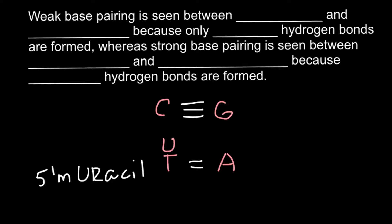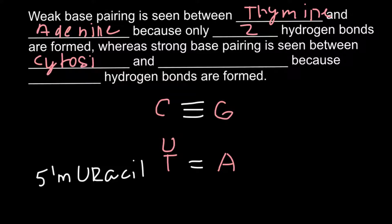So let's return to our problem. Weak base pairing is seen between thymine and adenine because only two hydrogen bonds are formed, whereas strong base pairing is seen between cytosine and guanine because three hydrogen bonds are formed.